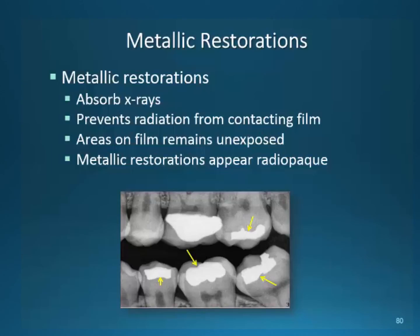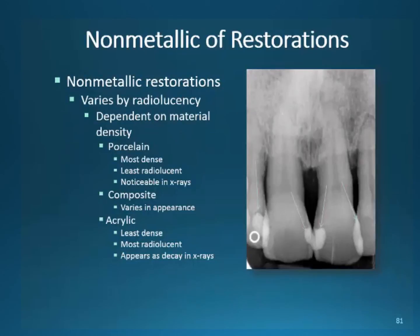This radiograph is an image of several types of metallic restorations. They appear radiopaque because the radiation does not pass through the teeth and is trapped in the metal restoration — the areas of the film do not get exposed because the radiation does not pass through metal to expose the halide crystals, so they appear radiopaque when developed. Non-metallic restorations are quite different — the material is not as dense, so x-rays do pass through with some change in density that you can see. Depending on the type of material, whether it's porcelain, composite, or acrylic, has something to do with the type of image you see. Porcelain is the most dense and will have the least radiolucency. Composites tend to vary in appearance, and the least dense are acrylics — these types of non-metallic restorations actually appear as decay on film.